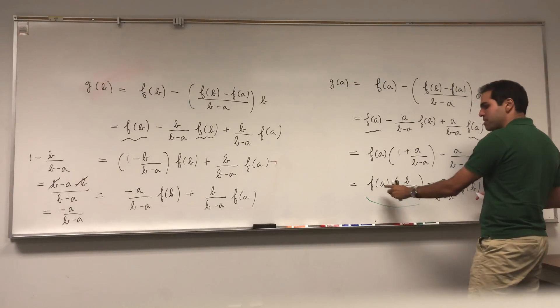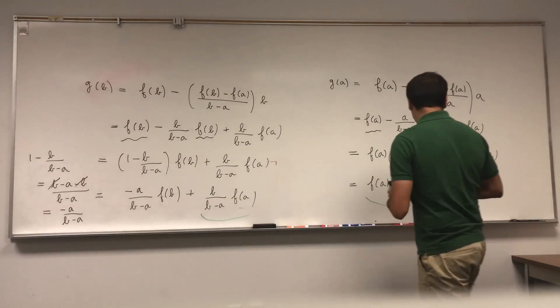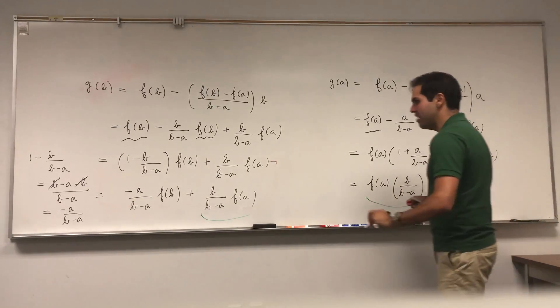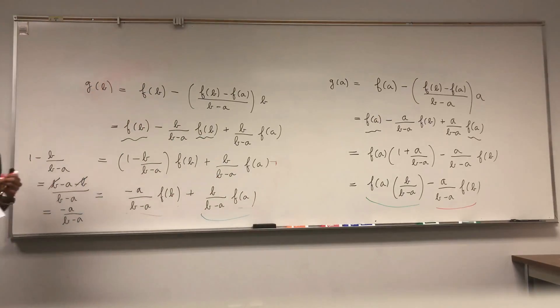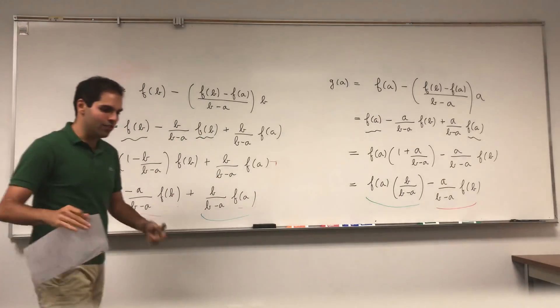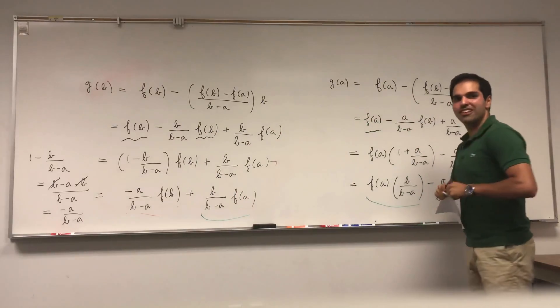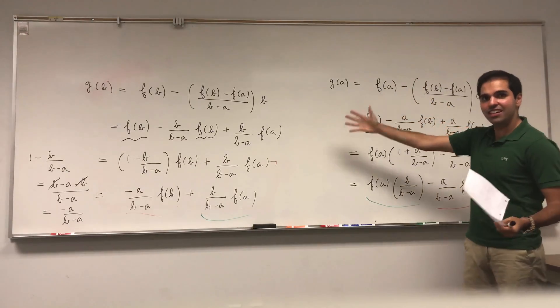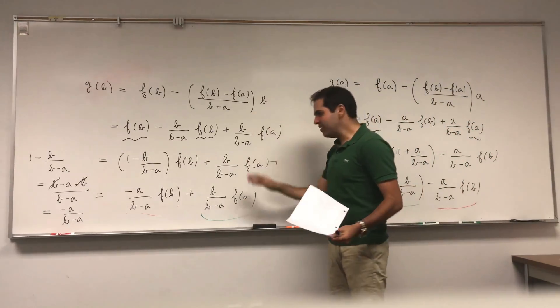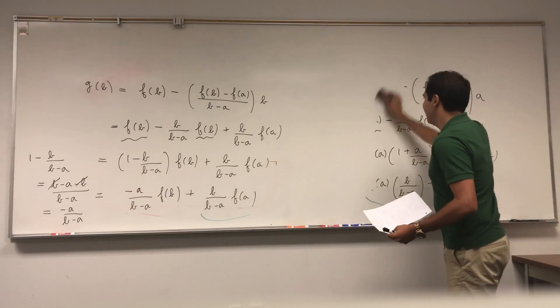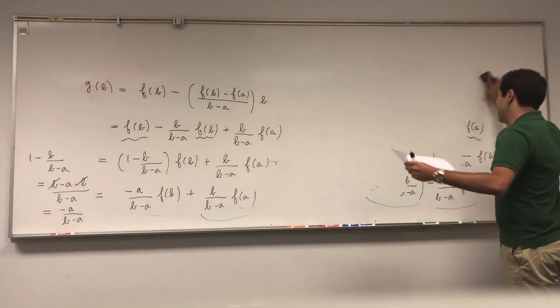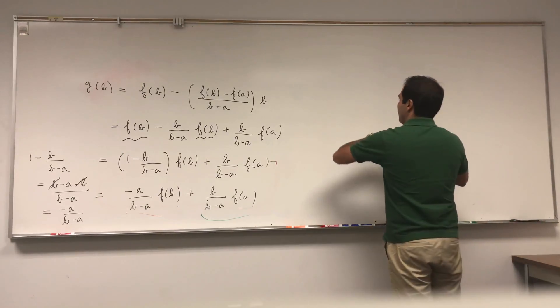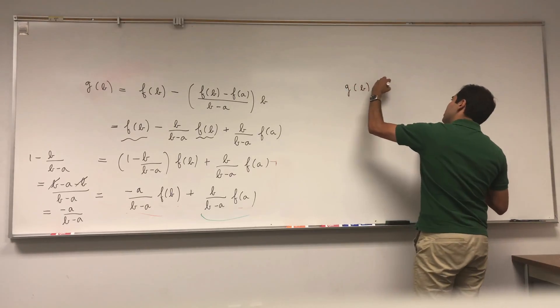And now look, how neat is that, because those two things are actually equal. Here you have b over b minus a f(a), which you have here, and here you have minus a over b minus a f(b). Fantastic. So you have this weird function where we took f and subtracted the slope of the secant line. It turns out this new function has the property that its initial value equals the ending value. And whenever this happens, we're on a roll because we can apply Rolle's theorem. So g(b) equals g(a).